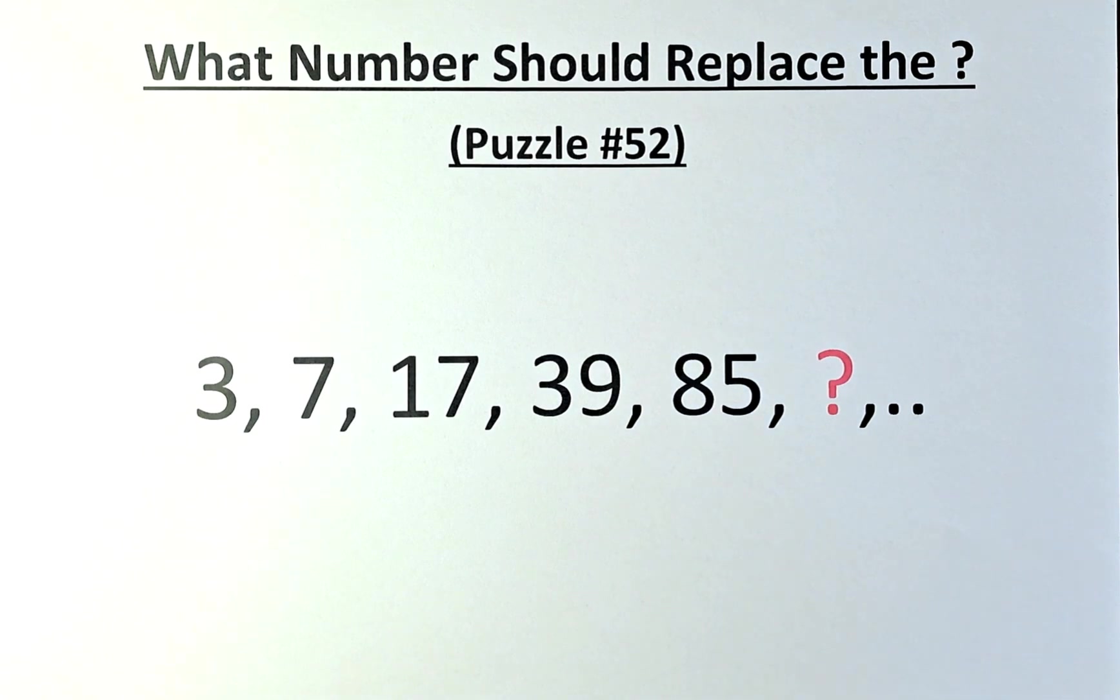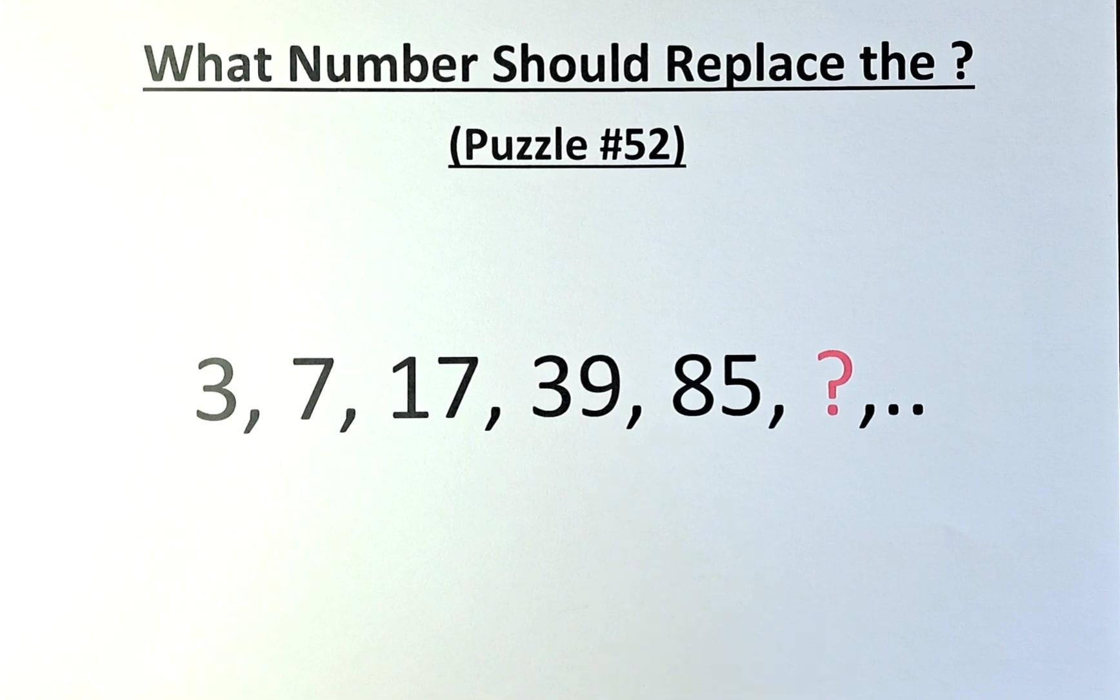I believe you have because this is not too difficult. So to get from 3 to 7 and 7 to 17, 17 to 39, 39 to 85 is a mixture of both multiplication and addition. So without further ado, let's solve it.